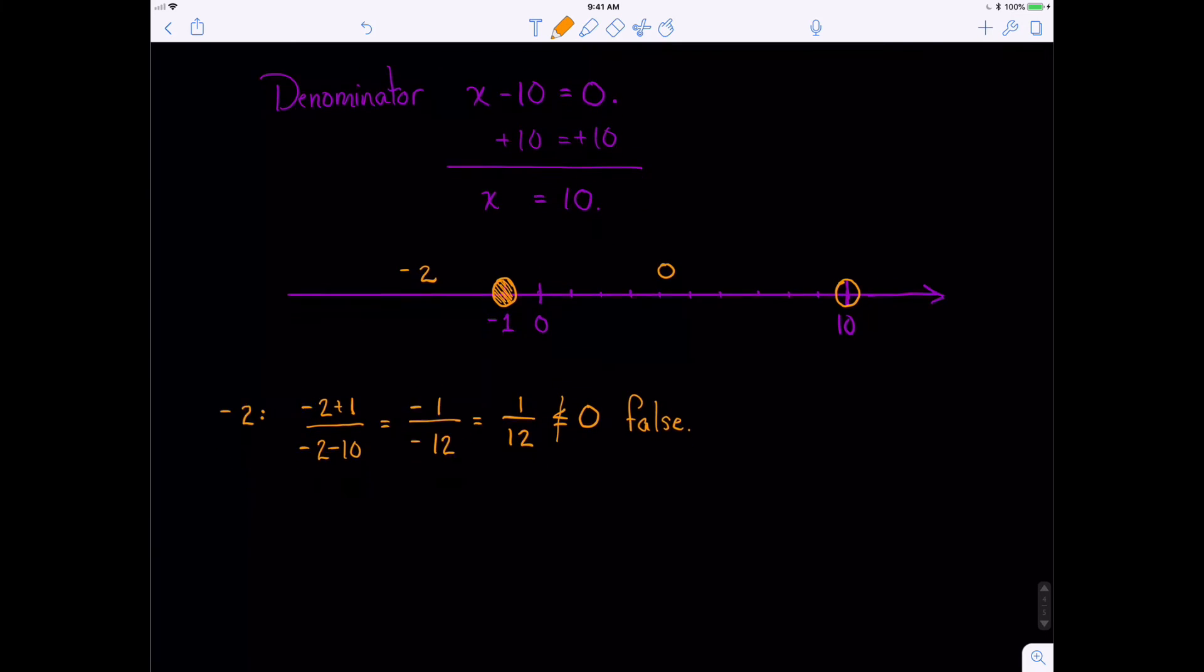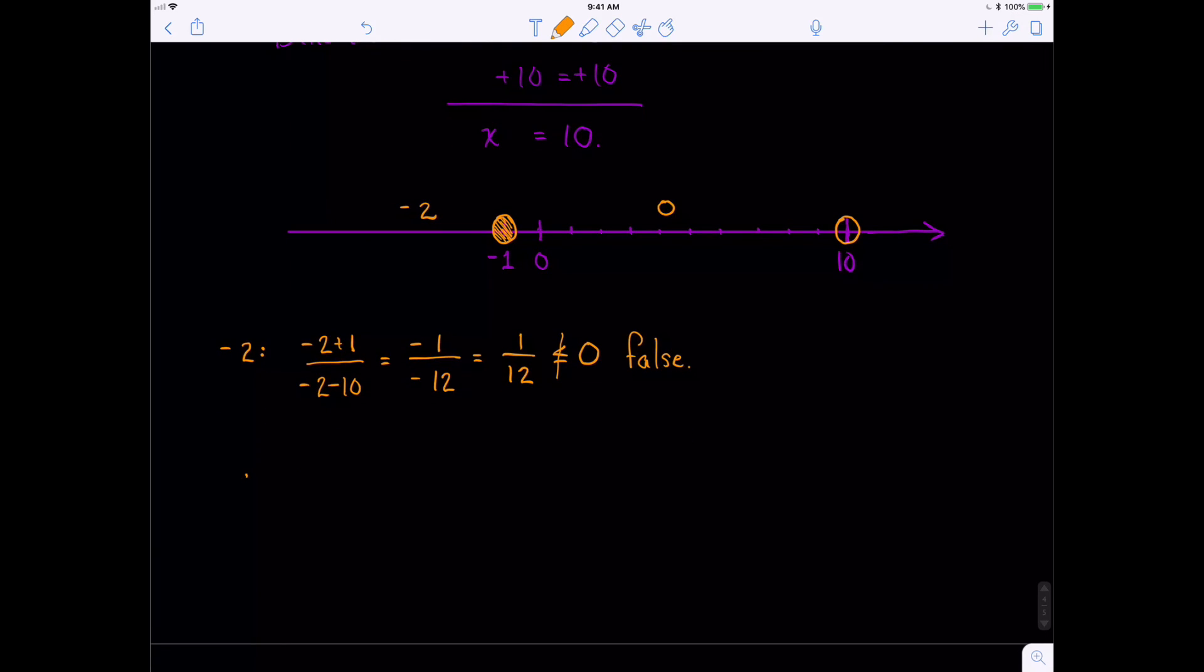All right, let's check our next region, 0. So in our middle interval, we have 0 plus 1 over 0 minus 10. Well, that's going to be the answer of negative 1/10, which is, in fact, less than or equal to 0. So this is true. And since it's true, we would shade the region between negative 1 and 10.